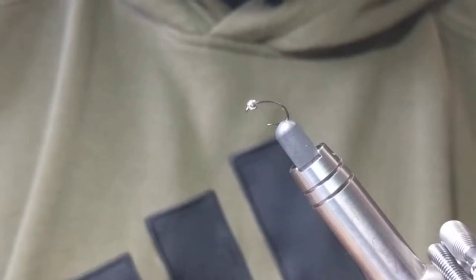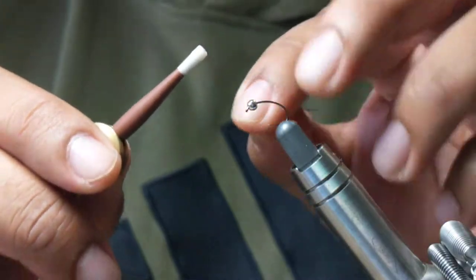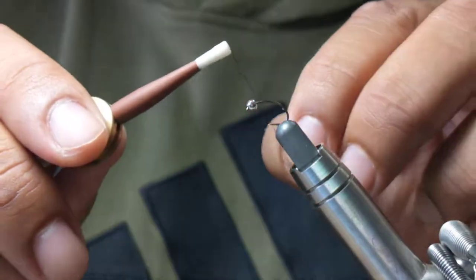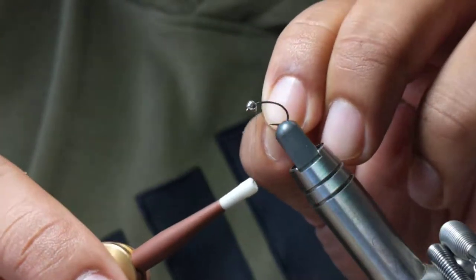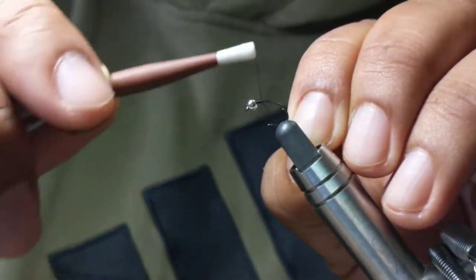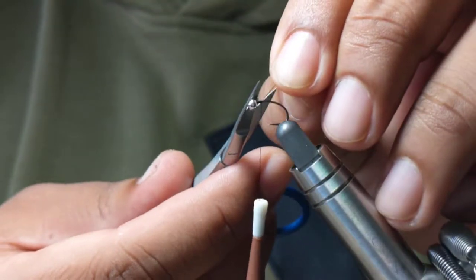Working with my 12-0 thread in black, I put my bead on, secured it to my vise, and now I'm starting with thread wraps behind the bead. I'll work my way enough where it's secure, nip away my thread tag, and continue with my wraps a little bit.